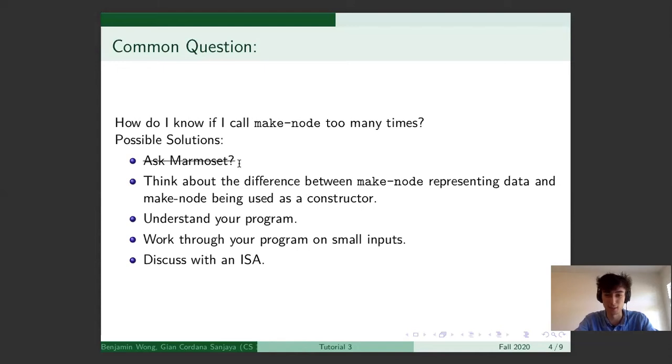The most common solution is that you ask marmoset and I've scratched it out because this is not a very good solution because marmoset will grade you. It'll tell you that your program is incorrect and it'll give you a long result. And the student will look at the wrong result and say, does this mean I'm running out of memory or does this mean that I am using too many make node calls? Or does this mean that I'm simply returning the wrong trees? And marmoset doesn't tell you why you're wrong. It just tells you that you are wrong.